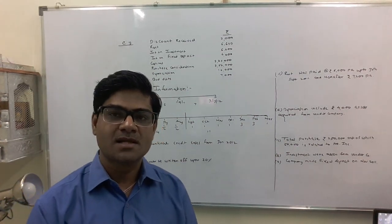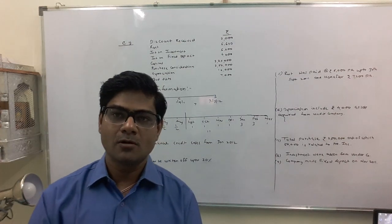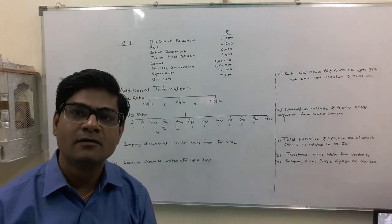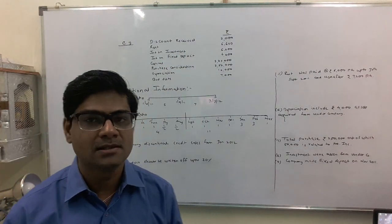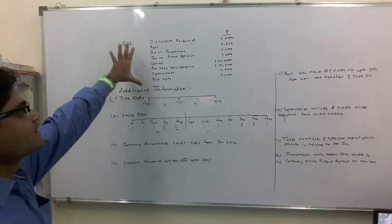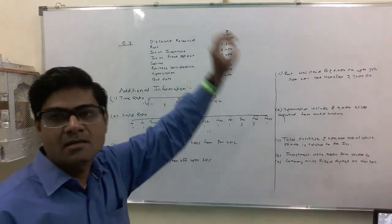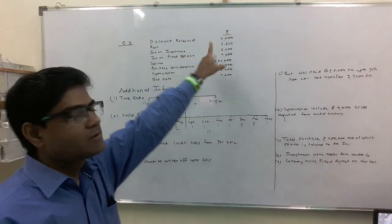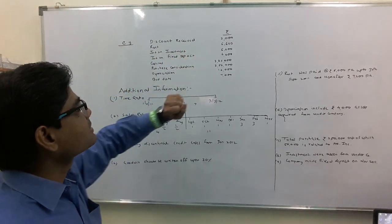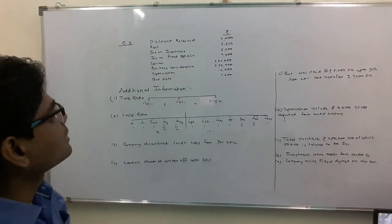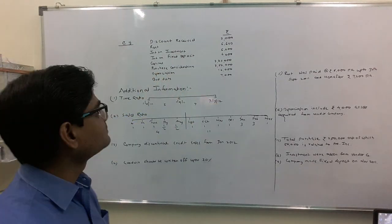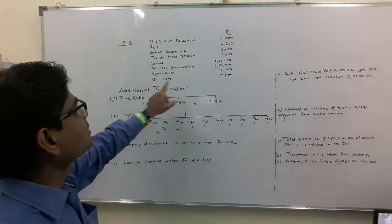In this clip we are going to discuss some important points in profit prior to incorporation. I already prepared a sum — not a full-fledged sum, just key points. For example: discount received is 2,000; rent 6,600; interest on investment 6,000; interest on fixed deposit 4,000; capital 2 lakhs 25 thousand; purchase consideration 2 lakhs 50 thousand; depreciation 10,000; and bad debts 7,000.